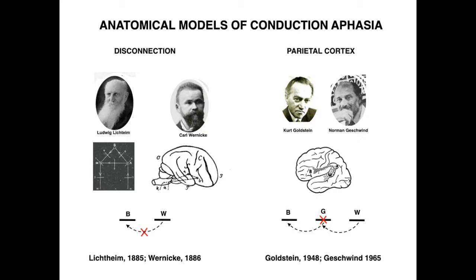Now that model has been challenged for two primary reasons. The first is what we call atypical patients — patients that present with repetition deficits but do not have a lesion to the arcuate fasciculus, so there is no apparent disconnection between the two regions. The second is that patients can present with the behavioral symptoms but their lesion is outside the arcuate fasciculus. Those two aspects challenge the classical disconnection model.